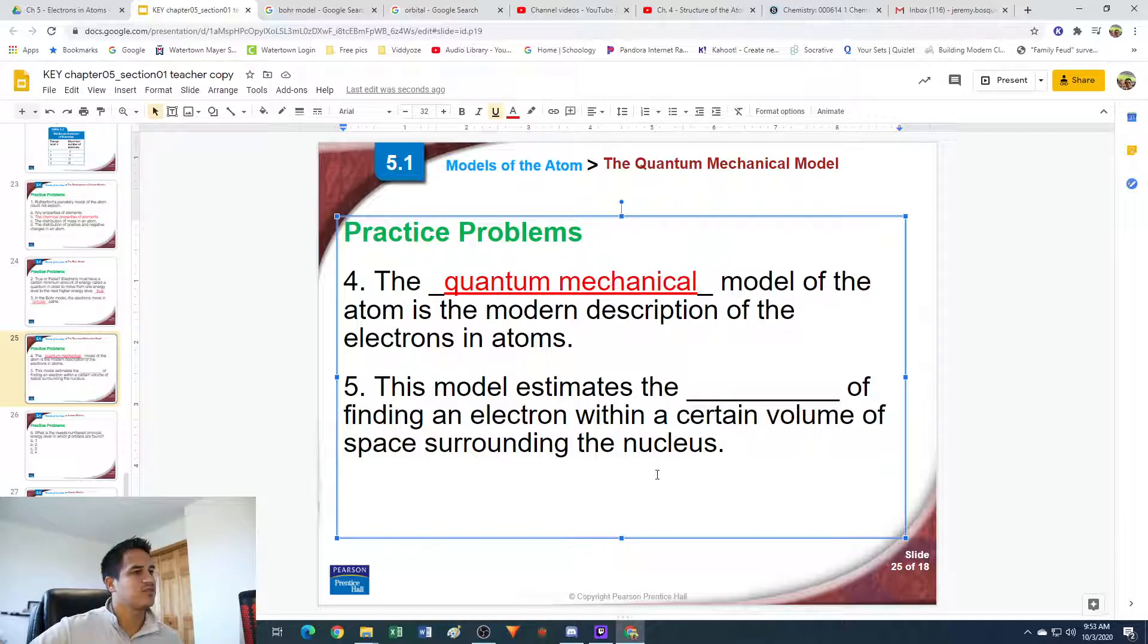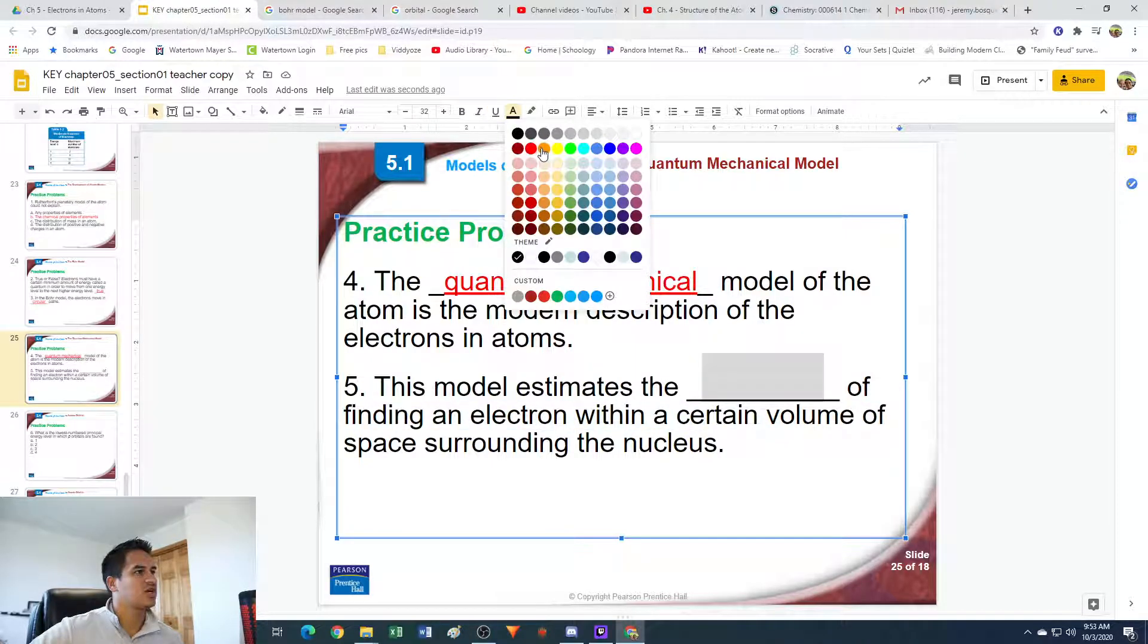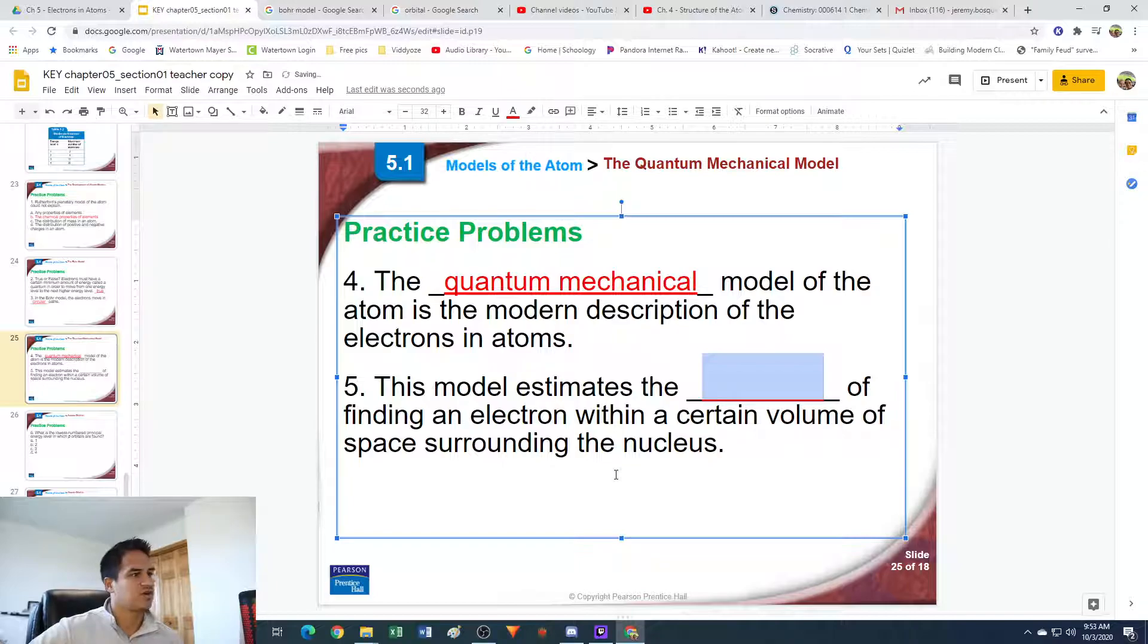Number five. This model estimates the blank of finding an electron within a certain volume of space surrounding the nucleus. This one is talking about probability. The quantum mechanical model estimates the probability of finding an electron within a certain volume of space around the nucleus. Probability - make sure you spell that right.